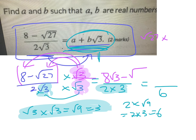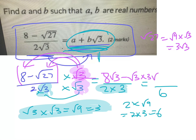With root 27, you might be better off simplifying it first, because three times 27 is pretty big. Root 27 is root nine times root three, which is three root three. So root three times root 27 becomes root three times three root three, because root 27 is three root three.